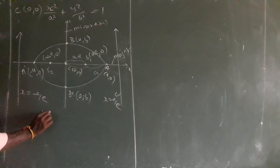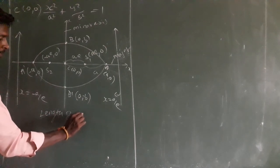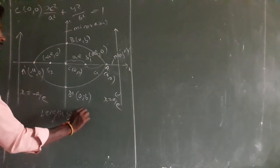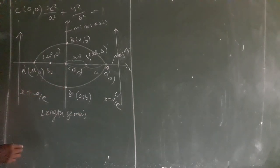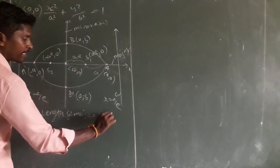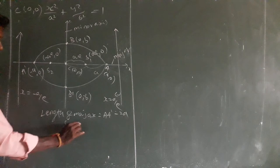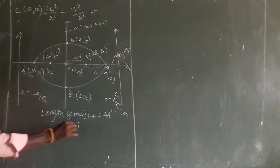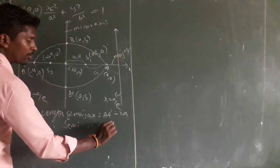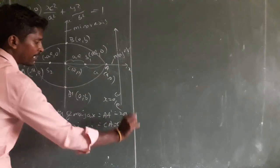Length of major axis: A to A dash equals 2a. Length of major axis is 2a. So semi-major axis — length of semi-major axis: center C to A, or C to A dash, equals a.